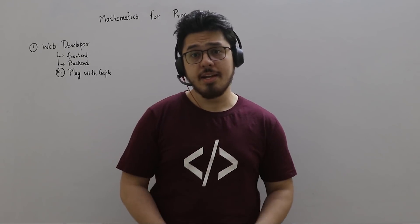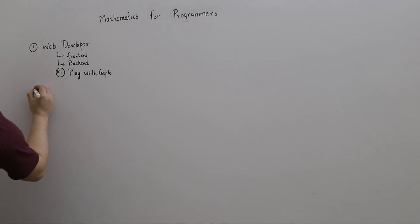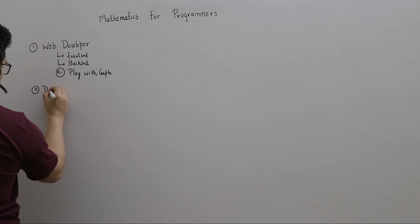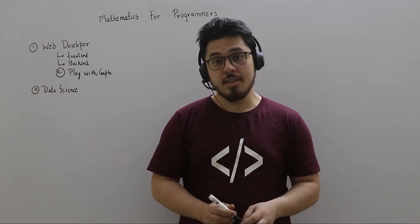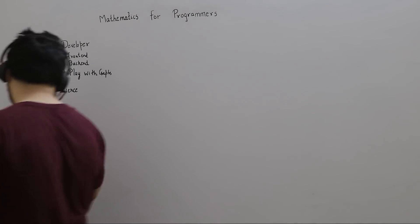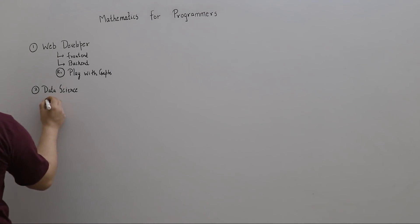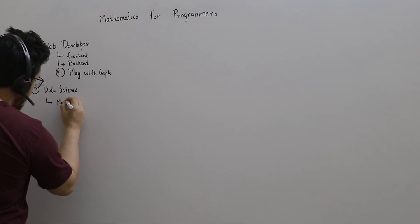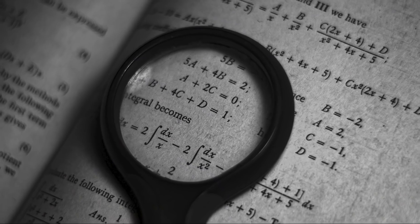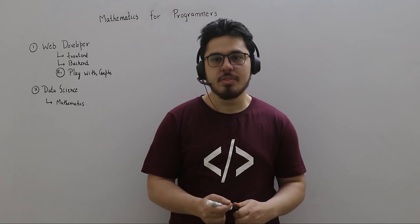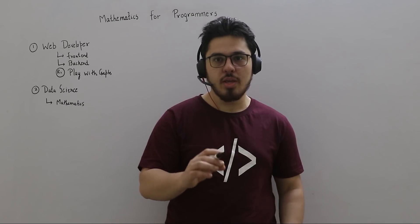Let's talk about data science, since a lot of people are targeting data scientist roles. If you hate maths, you will find it's the wrong field — data science is all about mathematics. You have to have calculus, probabilities, and statistics. All these things are necessary.